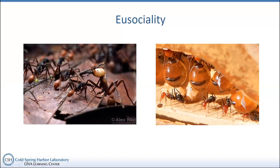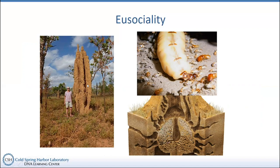Ants aren't the only ones that have this eusocial lifestyle. Termites are another one of my favorite examples. Here is a perfect image of a macrotermite termite mound in Africa. You can see the size of this mound next to the lady standing over here — it's probably 13 to 14 feet tall or larger. This mound is all above ground, and if we cut into the side of the colony, we can see something pretty intricate and complicated inside.